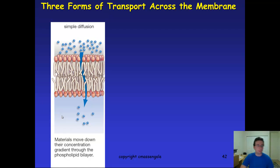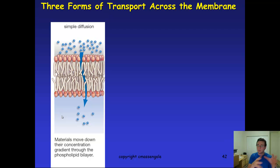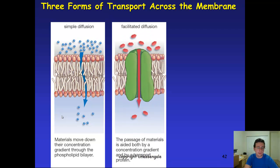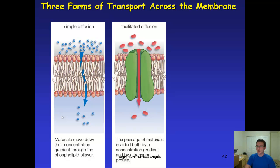To review: simple diffusion across the membrane happens with molecules like oxygen and carbon dioxide — they go straight through the membrane. The membrane is always moving and fluid, so there's space between the phospholipids, and nonpolar molecules pass right through. Facilitated diffusion involves channel proteins, used not only for water via aquaporins but also to move amino acids and sugars. Glucose, for example, is polar and very soluble, so it cannot get through the hydrophobic tails on its own — it needs a channel protein, just as water needs aquaporins.